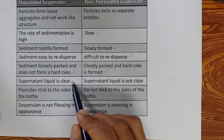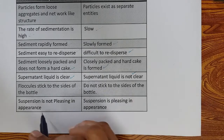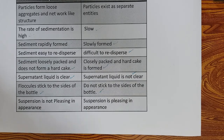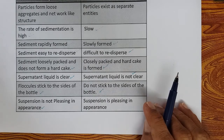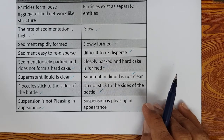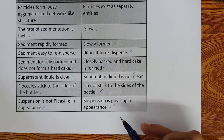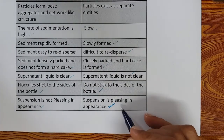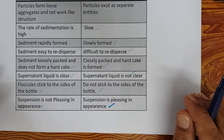In a flocculated suspension, the supernatant liquid is clear; in non-flocculated it is not clear. Floccules stick to the sides of the bottle; non-flocculated particles do not. Aesthetically, a flocculated suspension is not pleasing — you will see something settling and something clear at the top, as if there is a separation. A non-flocculated suspension is pleasing in appearance. That is why in cosmetics we always have a non-flocculated suspension, though we can try flocculated as well.